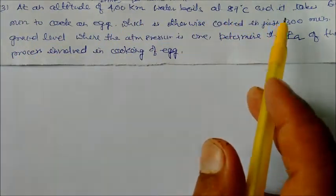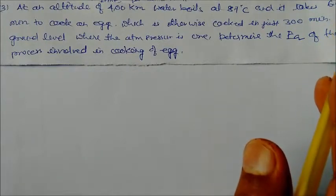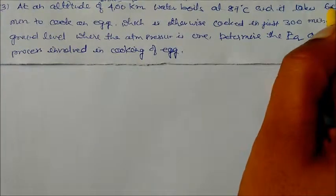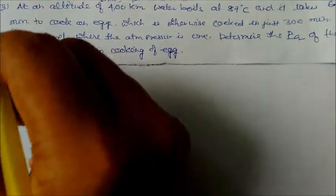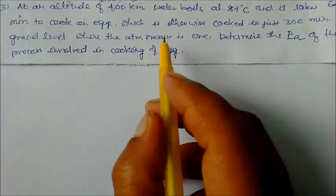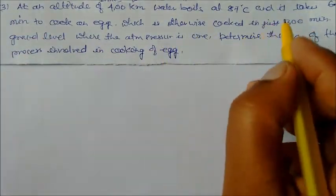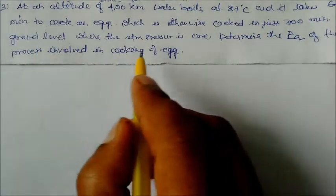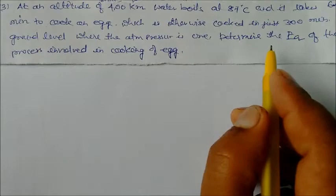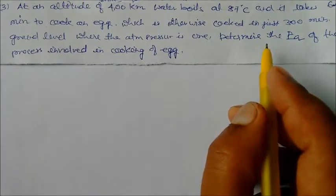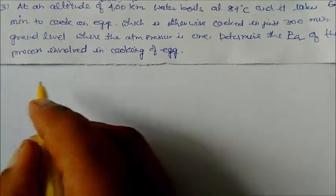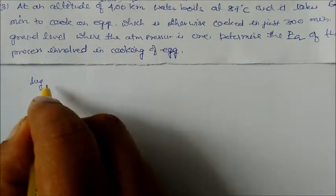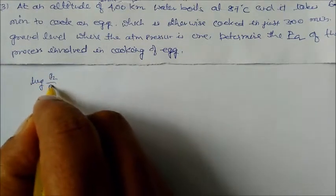Next problem: At an altitude of 400 km, water boils at 87 degree centigrade and it takes 6 minutes to cook an egg, which is otherwise cooked in just 3 minutes at ground level where atmospheric pressure is 1. Determine the activation energy for the process of cooking the egg.